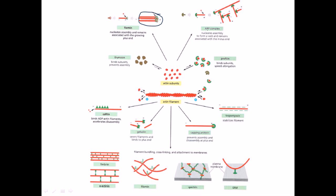The ARP complex is another protein complex that helps nucleate actin assembly and forms a web-like network. It binds to the growing filament and promotes branching, producing a web network of actin filaments. While formin helps produce straight chain actin filaments, the ARP complex creates a web-like branched structure.